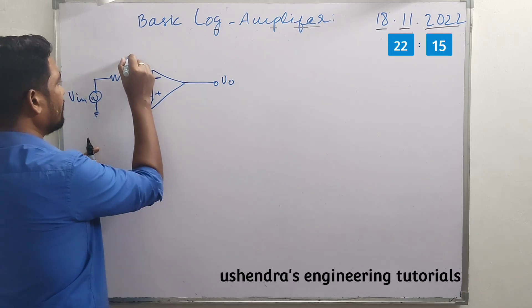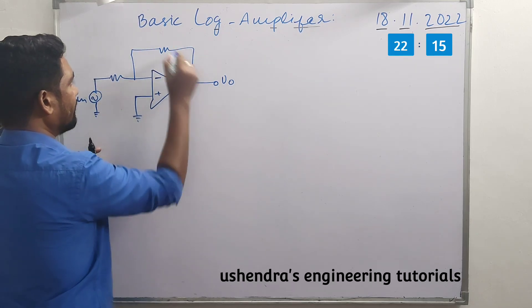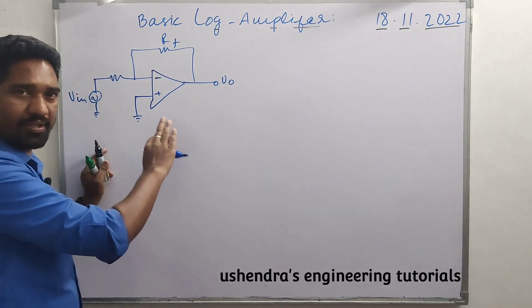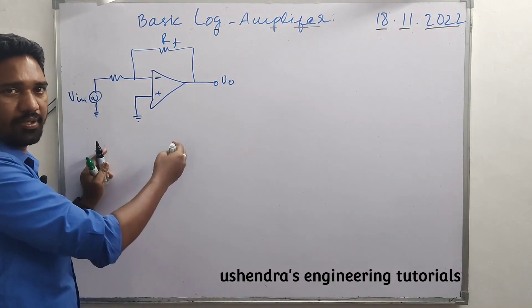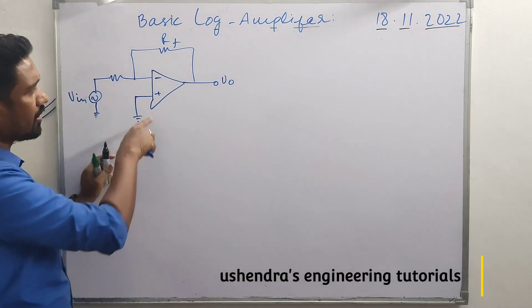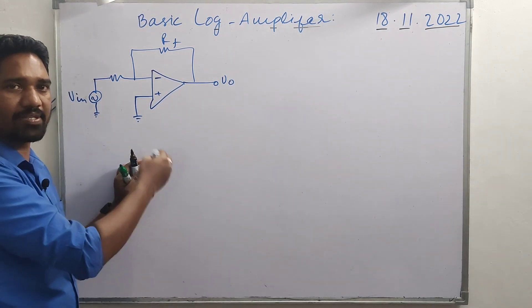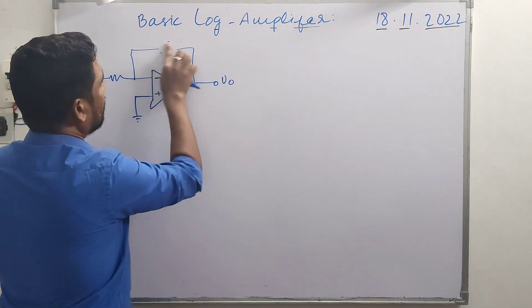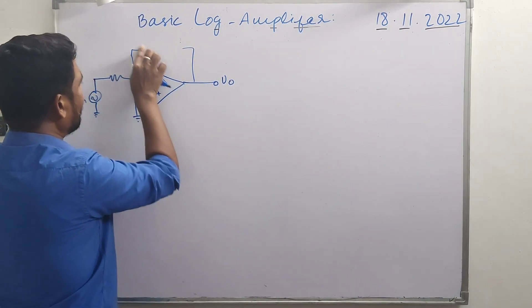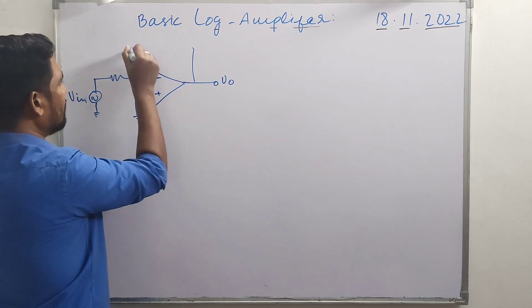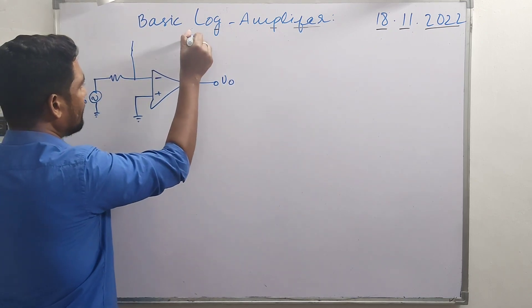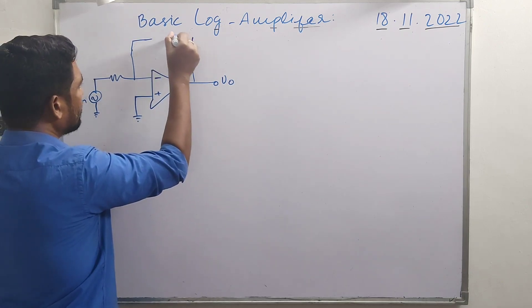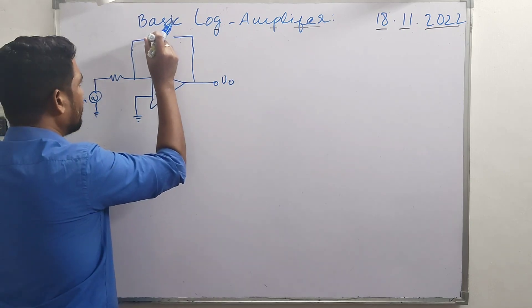With a feedback resistance RF, this is the general repeated arrangement of an operational amplifier in inverting amplifier mode. In a basic transistor log amplifier, instead of a resistor in the feedback loop, we introduce a transistor.